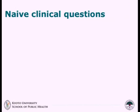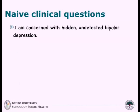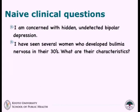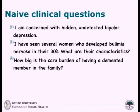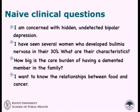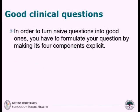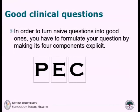So, now let's practice formulation of clinical questions. Some examples of naive clinical questions can be: I am concerned with hidden, undetected bipolar depression; I have seen several women who develop bulimia nervosa in their thirties — what are their characteristics?; How big is the care burden of having a demented member in the family?; or, much more simply, I want to know the relationships between food and cancer. In order to turn naive questions into good ones, you have to formulate your question by making its four components explicit: P, E, C, O — PECO.